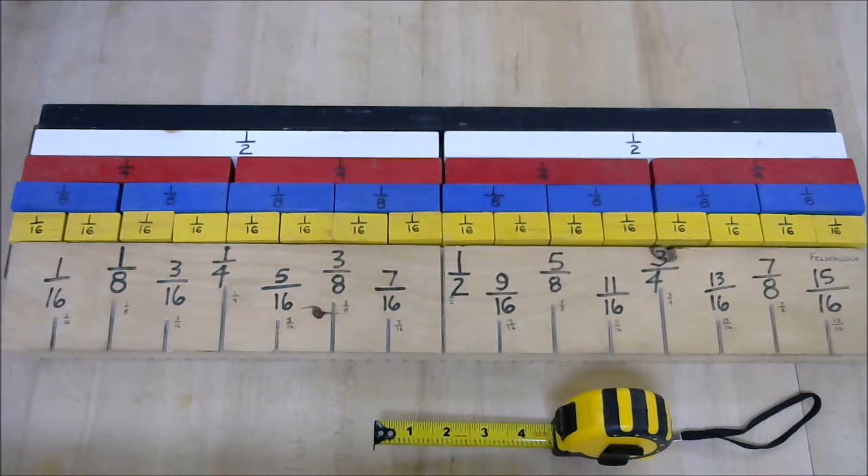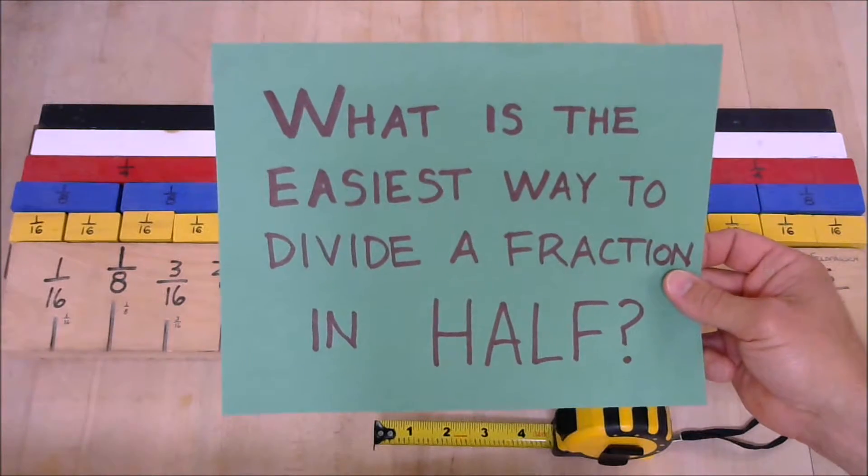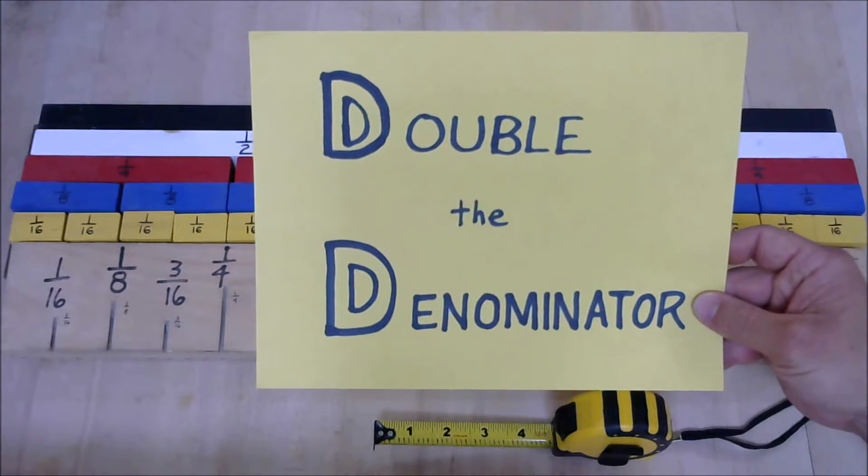The rule of DD is the answer to the following question: What is the easiest way to divide a fraction in half? Answer, not the daily double or a designated driver, but double the denominator.